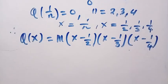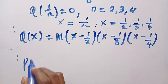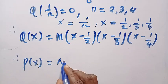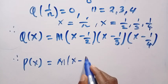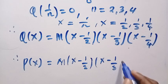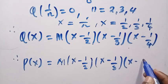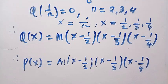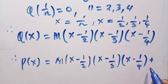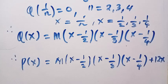So in the general formula, P of x equals m times (x minus 1 over 2) times (x minus 1 over 3) times (x minus 1 over 4), plus 12x. It will now be easy for us to find P of 2, but first we need to know the value of m.